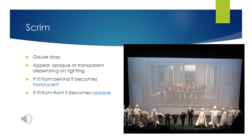Next is the scrim. Not all stages have a scrim. It is a gauze drop that can appear opaque or translucent depending on the lighting. If it is lit from behind, it becomes transparent or see-through, like the pictures shown. Or if it is lit from the front, it becomes opaque or difficult to see through.